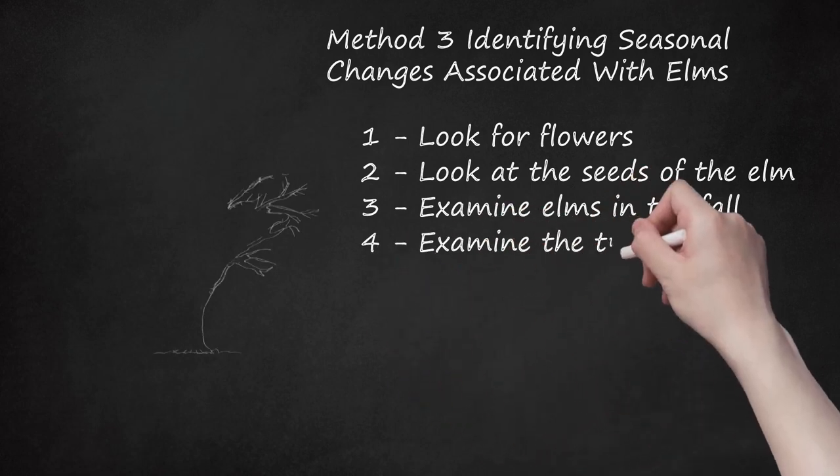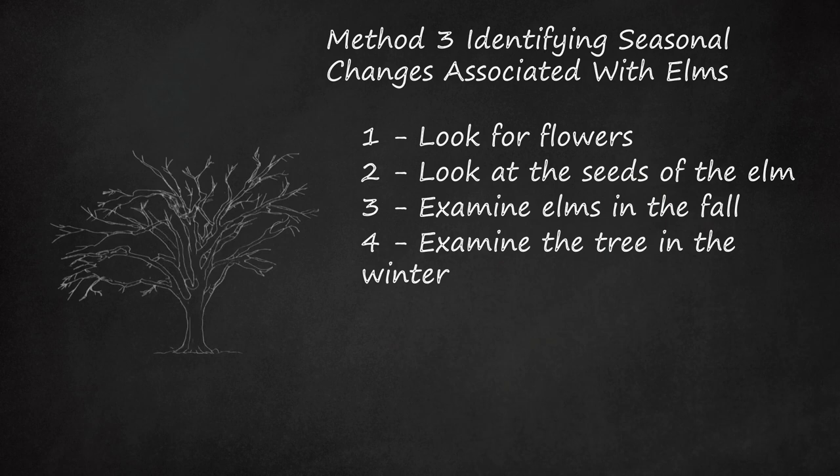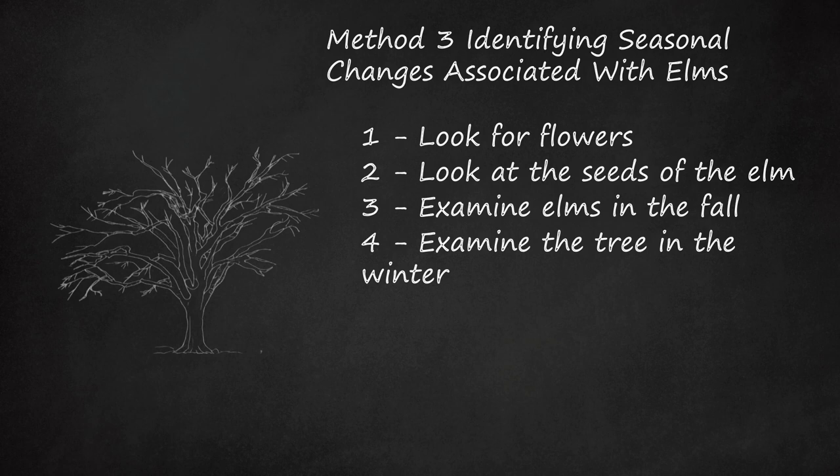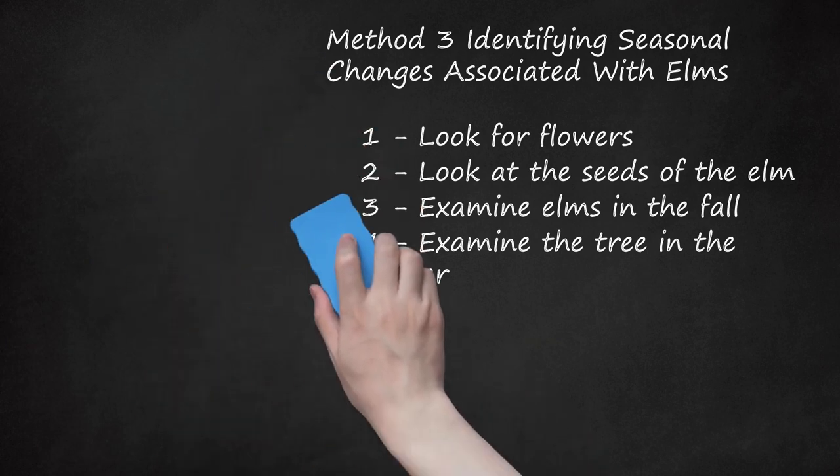4. Examine the Tree in the Winter. Elms are deciduous, meaning they shed their leaves once each year, starting in the fall. By the winter, they will be bare of leaves, and then in the spring they will start to re-grow their leaves. If you notice this foliage pattern, you might have an elm.